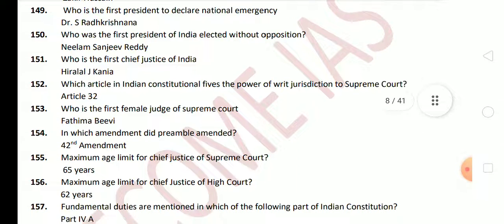Next question: who is the first female judge of the Supreme Court? This is a very important question — the answer is Fatima Beevi. Next question: in which amendment was the Preamble amended? The answer is the 42nd Amendment. Next question: what is the maximum age provided for the Chief Justice of the Supreme Court? 65 years. Maximum age limit for Chief Justice of a High Court? 62 years. For the Supreme Court Chief Justice it is 65 years, and for the High Court Chief Justice it is 62 years — these two age limits are very important.